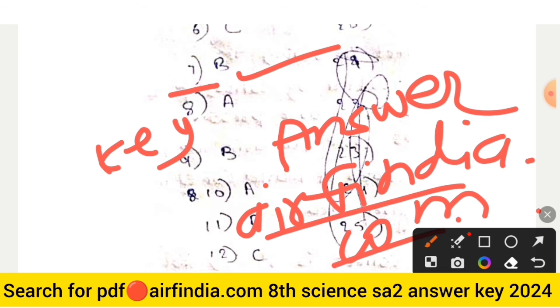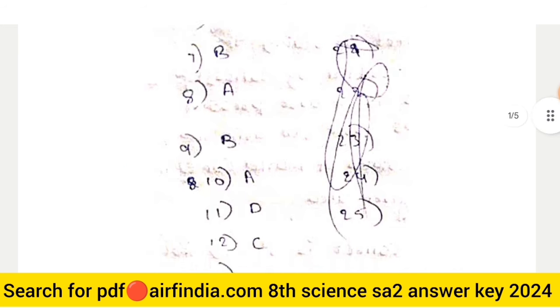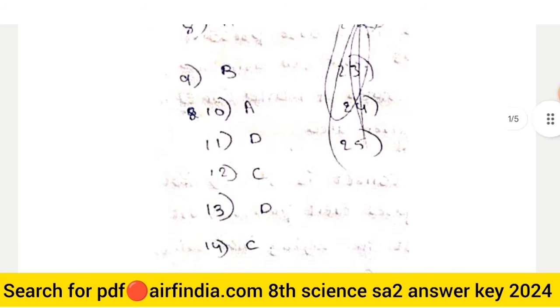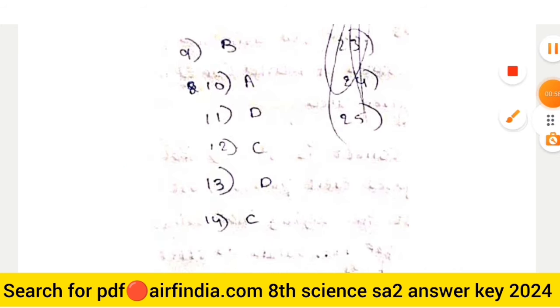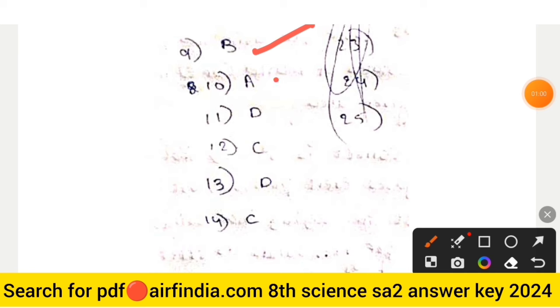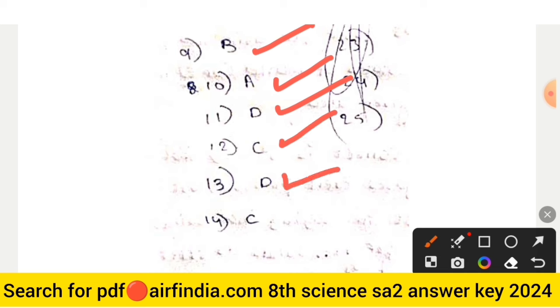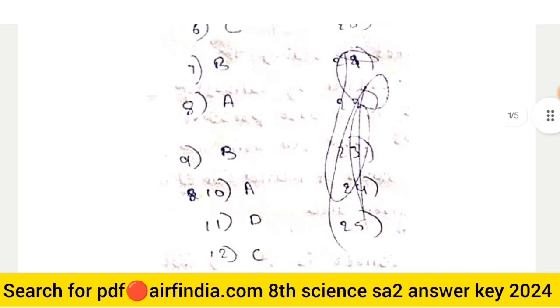Question number 8: answer is option B. Question 9: answer is option B. Question 10: answer is option A. Question 11: answer is option D. You can also take a copy and note down the answers. Question 13: right answer is option B. Question 14: right answer is option C.